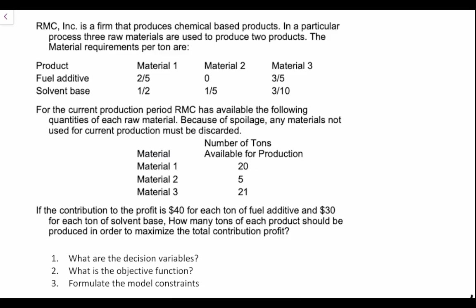RMC Inc is a firm that produces chemical-based products. In a particular process, three raw materials are used to produce two products. The material requirements per ton are for fuel additive and solvent base. For material one we need two-fifths of fuel additive and one-half of solvent base. Material two requires zero fuel additive and one-fifth solvent base. And for material three we have three-fifths of fuel additive and three-tenths of solvent base.